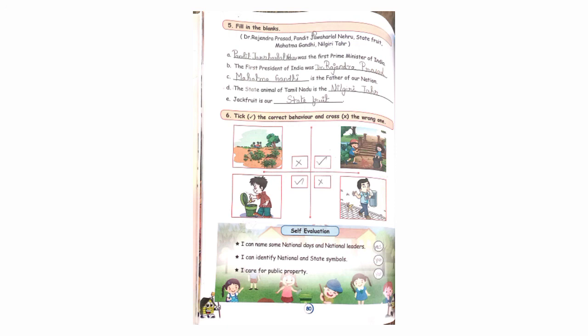Okay students, now self-evaluation. I can name some national days and national leaders. This is to see how you understand the lesson. By the end of this lesson, you can learn some national days and national leaders, and identify national and state symbols. I care for public property. By reading these good deeds, you learn to do good things, so you care for public property.